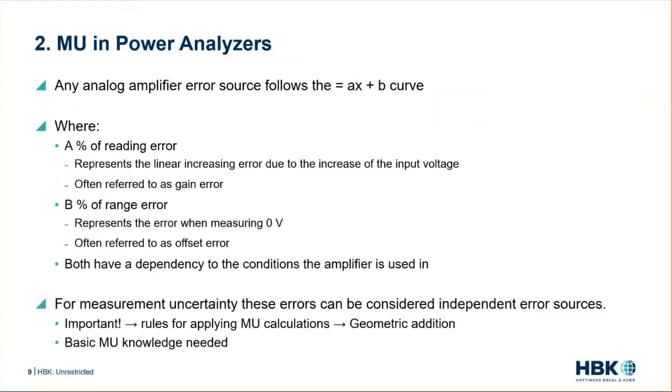Where a is your percent of reading error. In this case, it represents the linear increasing error due to the increase of the input voltage, which is often referred to as a gain error.